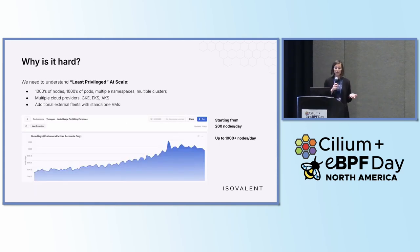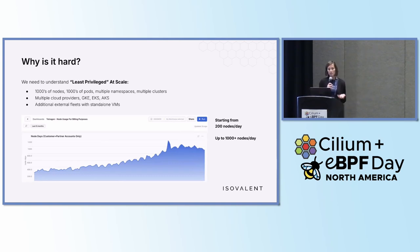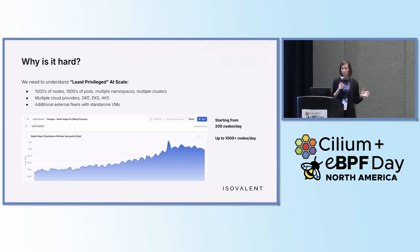But it's also hard because you need to do it at scale. We are talking about thousands of nodes, thousands of pods, multiple namespaces, multiple clusters, even multiple cloud providers. And additionally, you have external fleets like standalone VMs. This is just a simple screenshot about the cluster that we scaled, which can be around 200 nodes per day, up to 1,000 nodes per day.